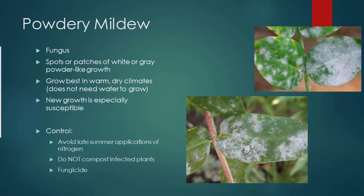Powdery mildew is something that can be confused with mealy bugs, but powdery mildew looks more like mildew — it's a grayish color and is a fungus. These fungi can be introduced from too much water on the plant and leaves staying there, so you want to avoid over-watering. You can apply fungicide to get rid of powdery mildew. Keep it as dry as possible, keep that humidity down, and that will help avoid all of your fungi.